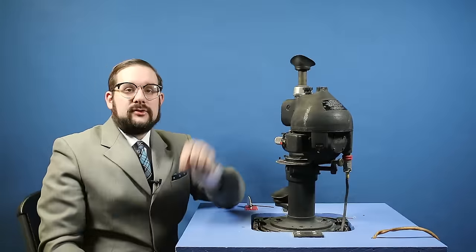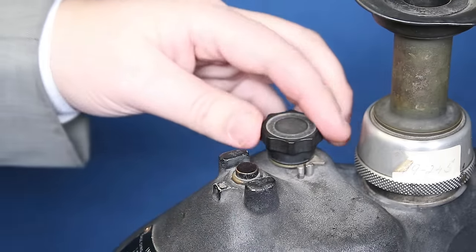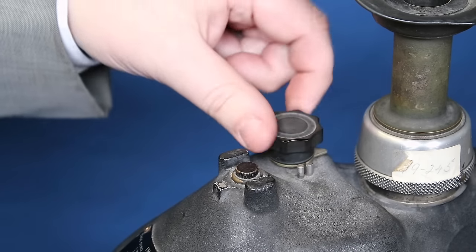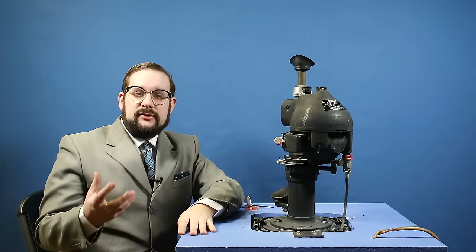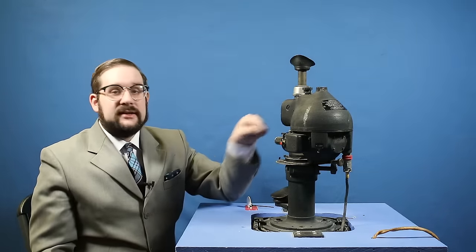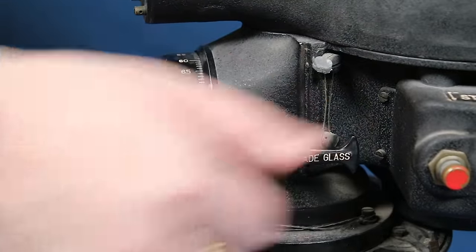Looking through this what you would see is an image of the ground below with an illuminated reticle superimposed on top of it. To adjust the brightness of the reticle you turn this rheostat knob here at the top. If the image is too bright, say you're flying over snow and ice in the middle of the day, you can drop a shade glass in the periscope by pulling down on this lever.